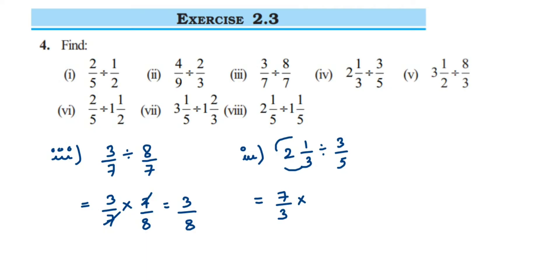Now take the reciprocal of 3 by 5, which becomes 5 by 3. We cannot cancel any numbers, so just multiply: 7 fives are 35, and 3 threes are 9. We get 35 by 9 as the answer.